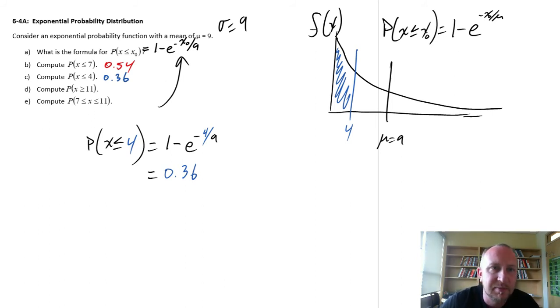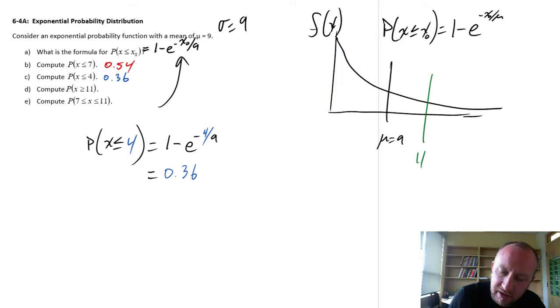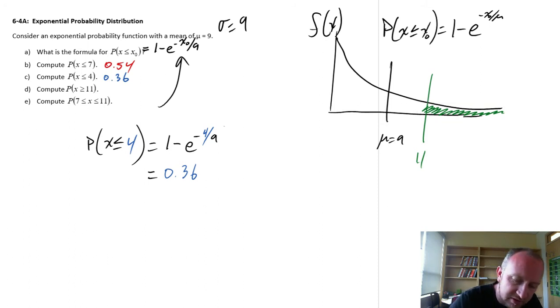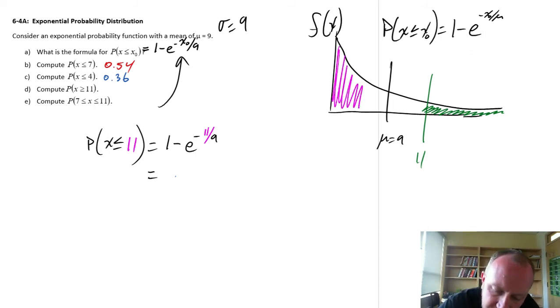Compute the probability that x is greater than 11. So now we're going to come out to this side of the distribution at 11, and we want to know this area here. Well again, the area under the curve is equal to 1. So what we're going to do is we'll calculate using our function here that we've just been working with. I'm going to plug in, we'll do the same calculation but with 11.